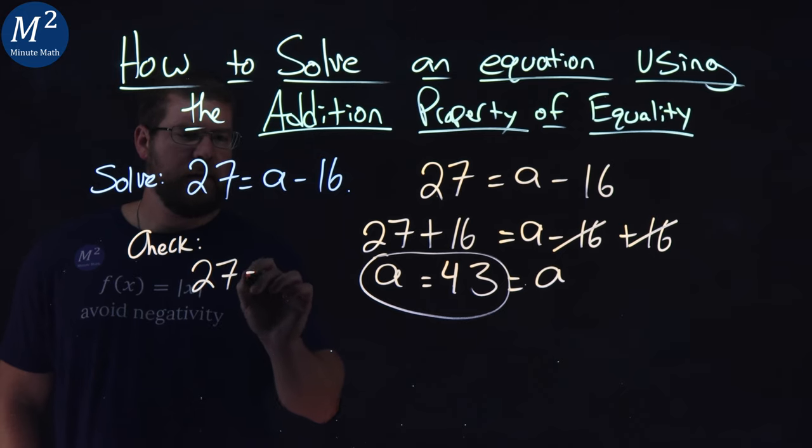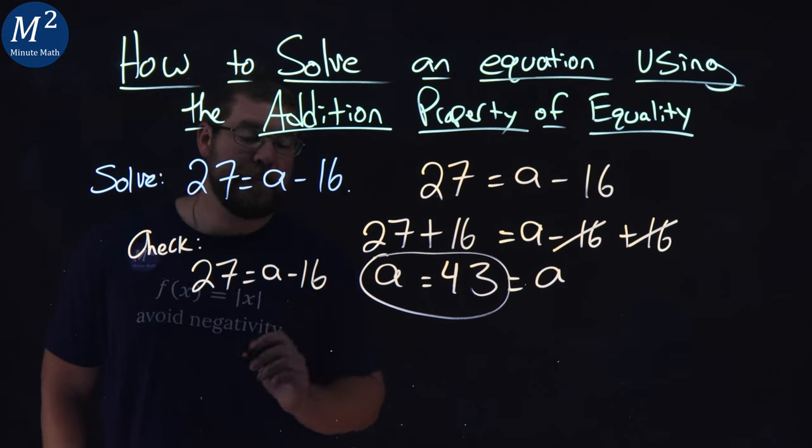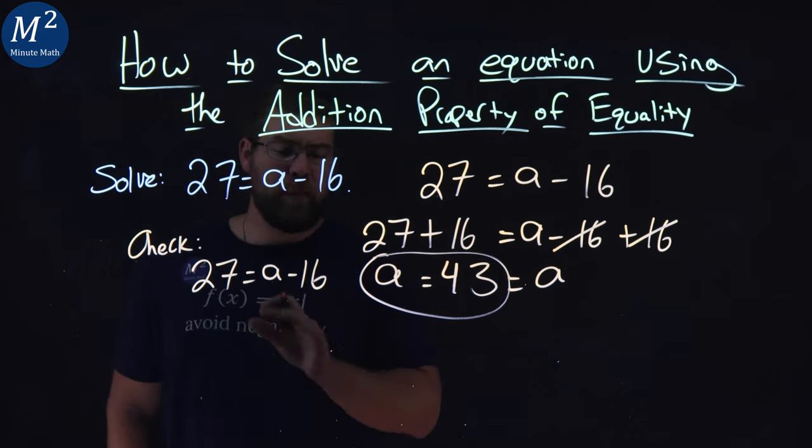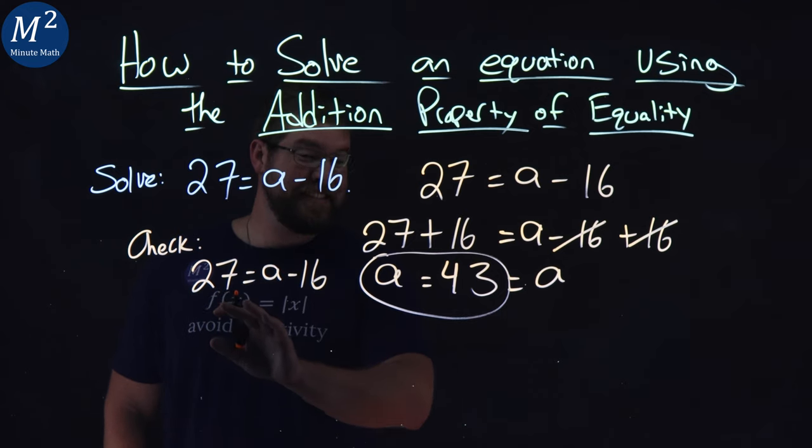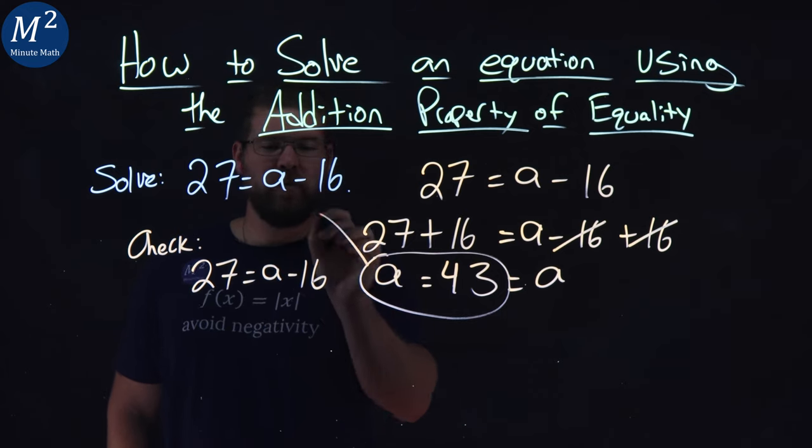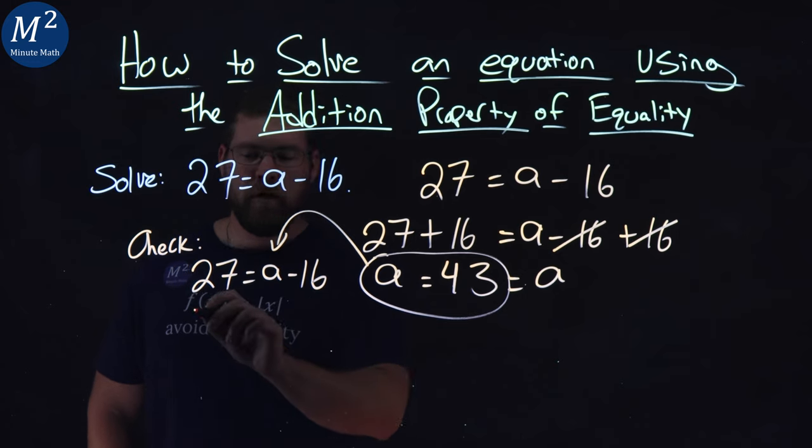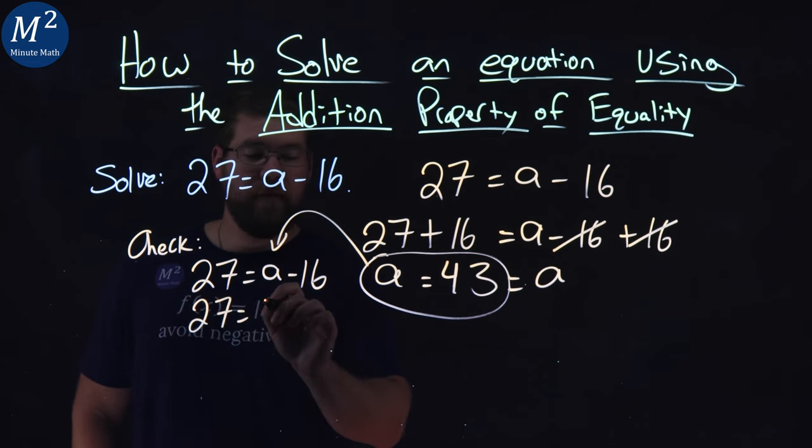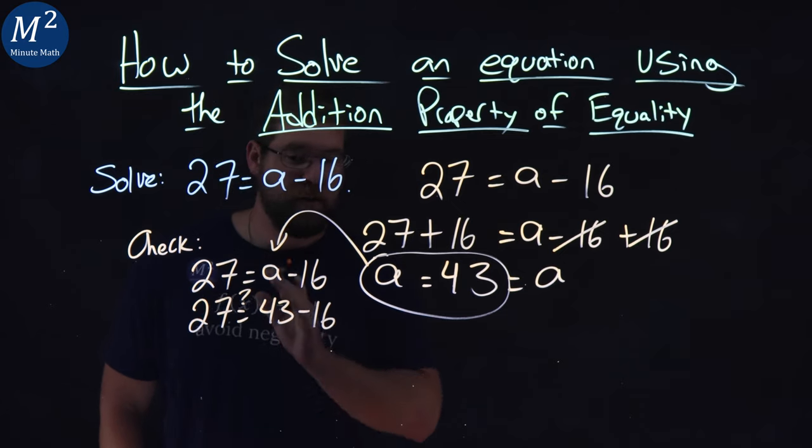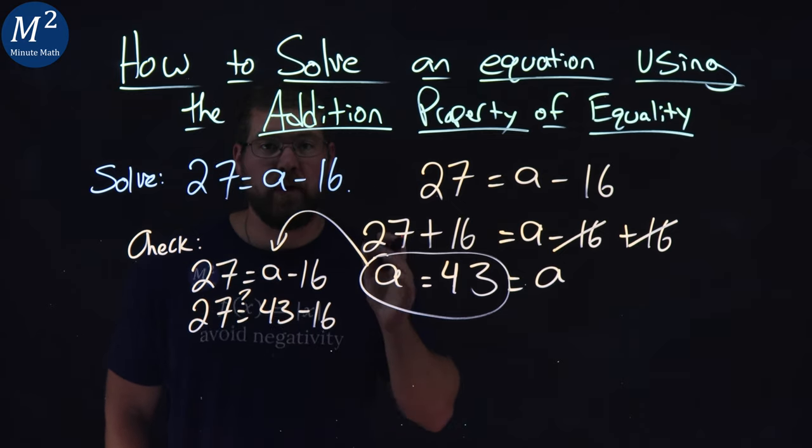We'll rewrite our equation: 27 equals a minus 16. Now, to check our work, I'm going to rewrite that equation, which I just did, and substitute 43 in for a. 27 here equals 43 minus 16. Now, I'm checking to see if the left and right-hand side are equal.